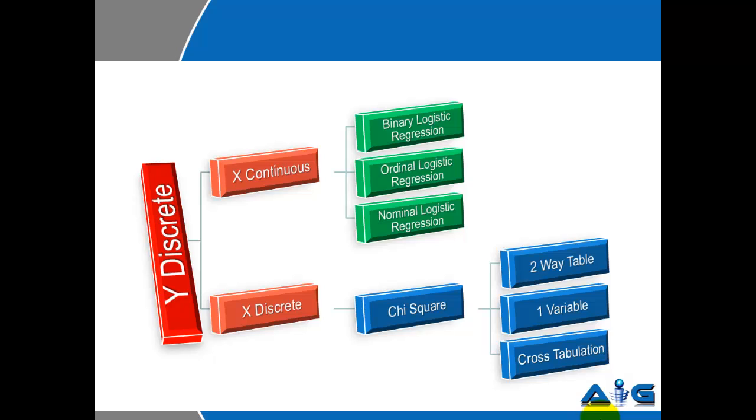Chi square comes in three different forms: a two-way table, one variable, or cross tabulation.